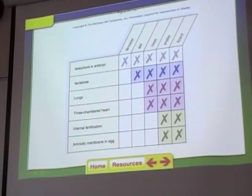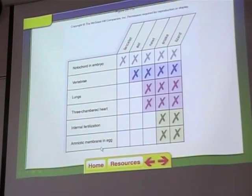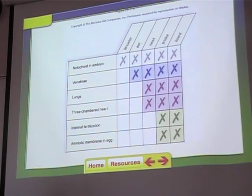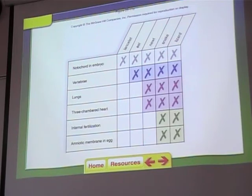Which character is oldest? The notochord and embryo, because all of the organisms have it. If it's present in all organisms, it must have come about very early in evolution — just like a chromosome mutation that's present in many organisms probably arose long ago. So way back, there was a mutation that allowed a notochord, and all of the organisms have that.